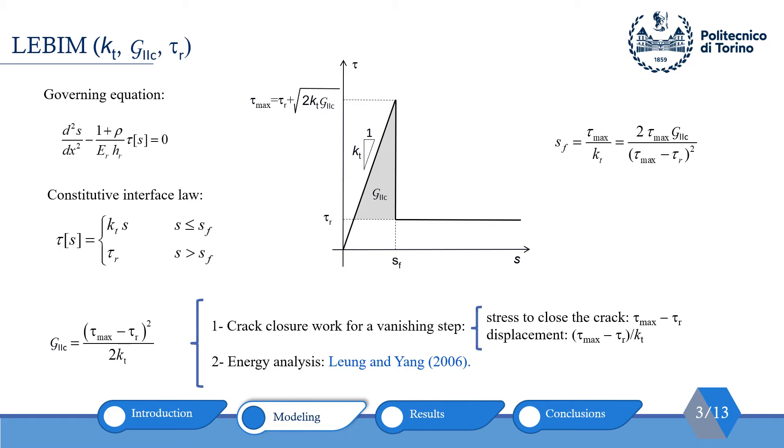In this model, it is assumed that the interface is a bed of springs with a coefficient of kt. Two reasons can be mentioned about why we consider the gray area as G_2c or fracture energy. First, crack closure work for a vanishing step or energy analysis of the whole structure.